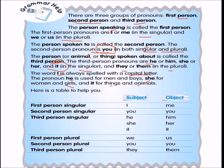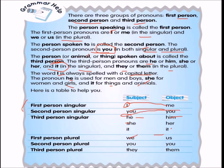Looking at the pronoun table: First person singular — subject 'I', object 'me.' Second person — subject 'you', object 'you' (same for both). Third person singular — subject 'he', object 'him'; 'she'/'her'; 'it'/'it.' First person plural — subject 'we', object 'us.' Third person plural — subject 'they', object 'them.'